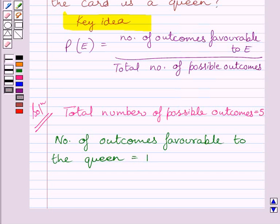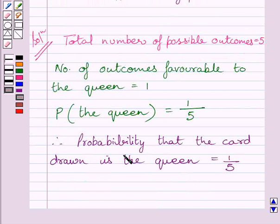From the key idea, we know that probability of an event E equals the number of outcomes favorable to E upon the total number of possible outcomes. So, the probability of getting the queen equals one upon five. Therefore, the probability that the card drawn is the queen is 1/5.